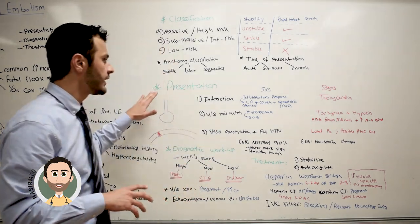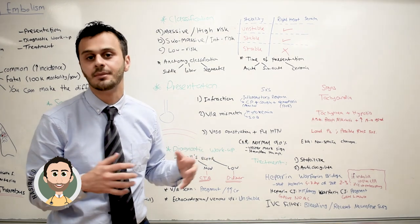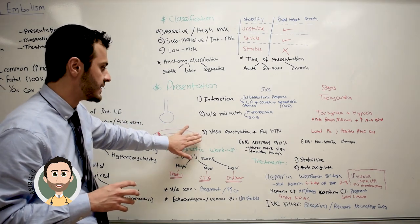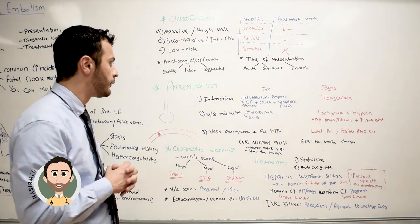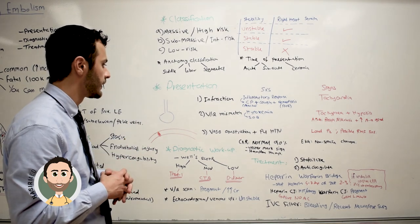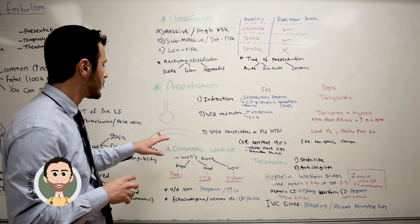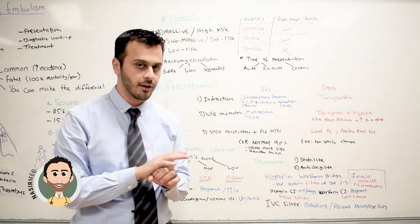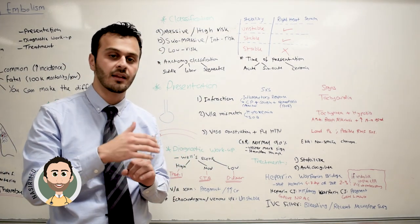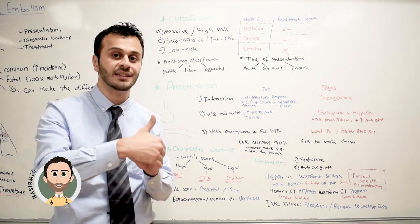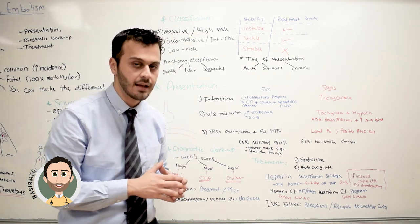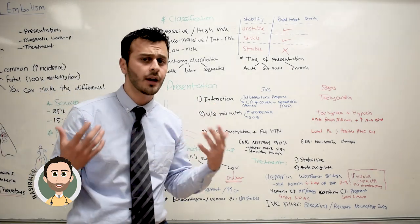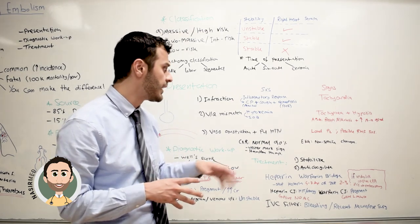Now, moving on to the signs and symptoms of pulmonary embolism. I like to divide them based on the mechanism of action. When the blood clot obstructs the pulmonary artery, there will be a loss of blood flow to the lung segment distal to that artery — and that's what we call infarction. Once infarction happens, the body responds with an inflammatory reaction.